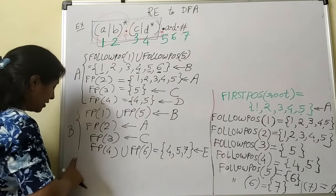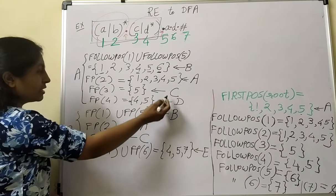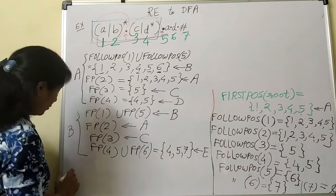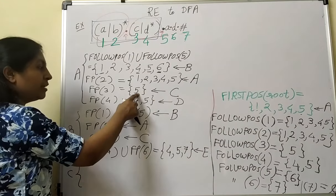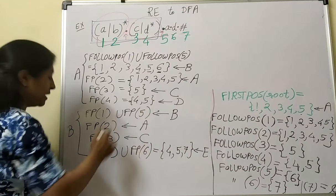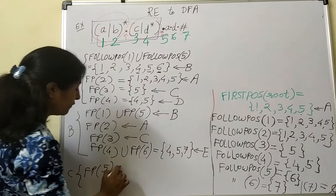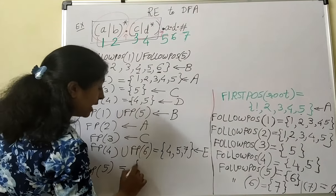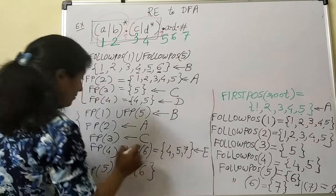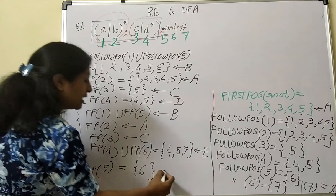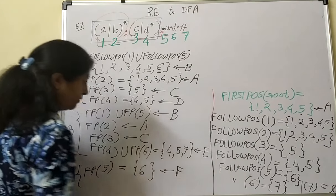After completion of B, repeat the steps for C. State C has only symbol 5, so take follow position of 5, which is {6}, giving a new state F.